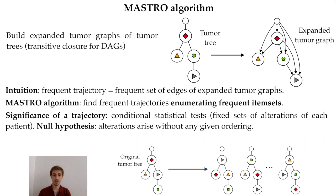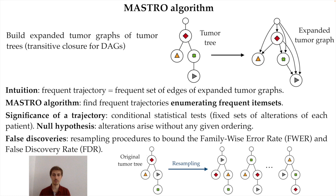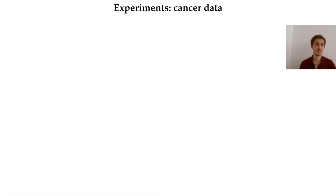To assess the significance of trajectories, we developed conditional statistical tests to evaluate if a trajectory is more frequent than expected by chance. The null hypothesis is that alterations arise independently without any order, while keeping the same set of alterations per patient fixed to account for different cancer subtypes. We use resampling-based procedures to bound the family-wise error rate and the false discovery rate, taking into account the correlation structures of trajectories without overcorrecting for multiple hypothesis testing.